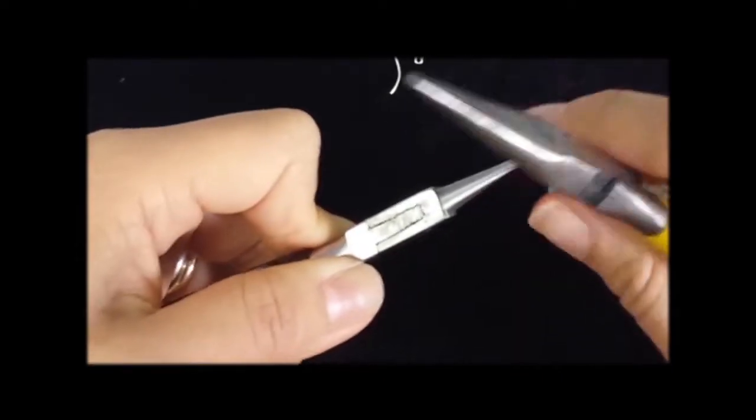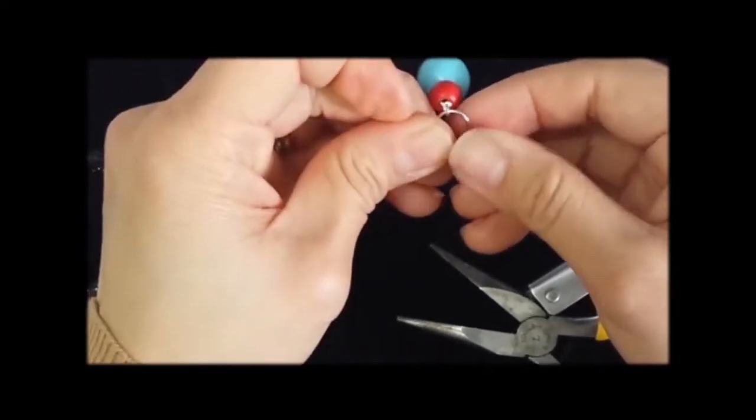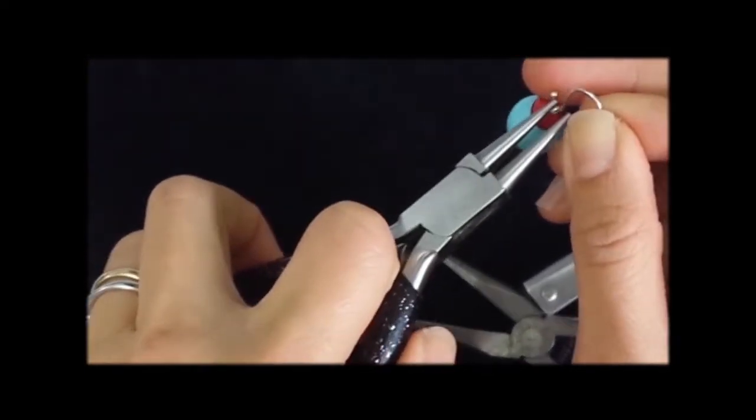Slightly open up the front end of the shepherd's hook, just enough to slide the loop in place, and then press the ball end close to ensure security of the beads.